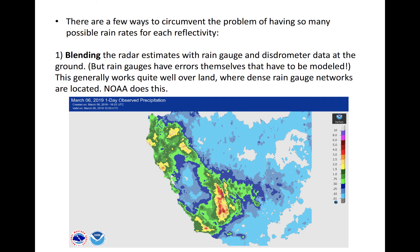A few ways exist to get around the problem of having such wide ranging possibilities for rainfall based on a single observation of reflectivity. One commonly used technique called kriging involves blending the radar estimates with relatively isolated rain gauge and distrometer data located within a radar domain.